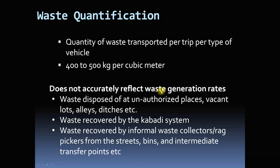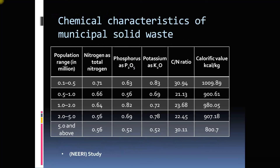This method does not accurately reflect waste generation rates because waste is also thrown at unauthorized places. Additionally, waste recovered by the kabadi system — which is very good in India — is recycled and doesn't reach the official site. Waste taken by rag pickers from the streets also doesn't get counted. You can also study the chemical characteristics of waste along with physical characteristics — for example, if you want to use it for biogas or compost, you should know what nutrients can be extracted.